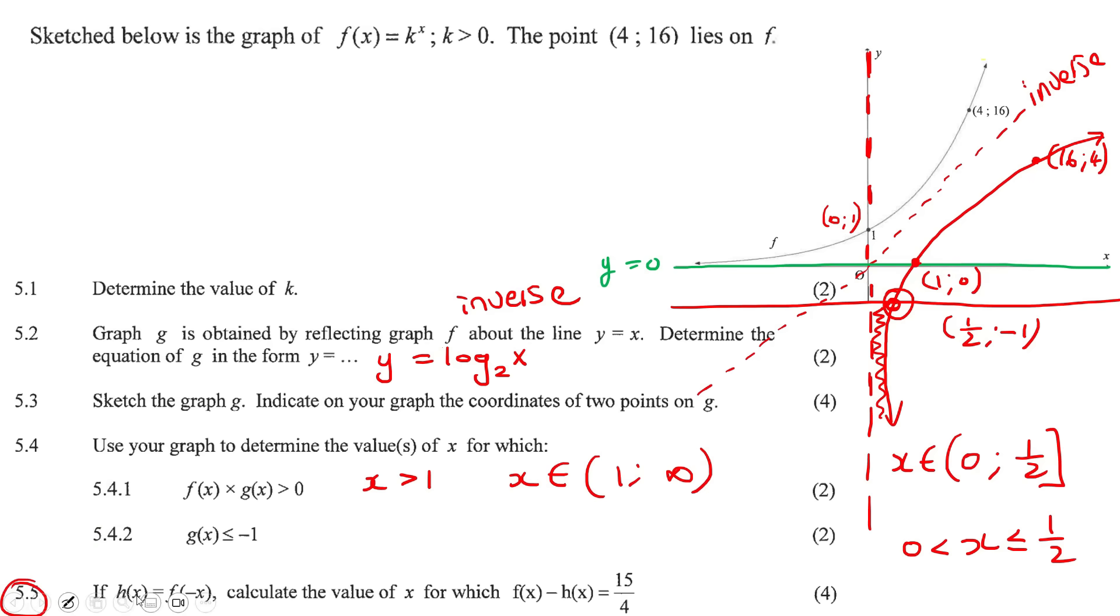This question says if h is equal to f with a minus x in it. So that means that if f of x is 2 to the x, then h of x, which they said is f of minus x, then you're just going to plug a minus into the place of x. There we go, so that's the equation of h. Now this can be written in different ways if you wanted to. It says calculate the value of x for which this minus this is this.